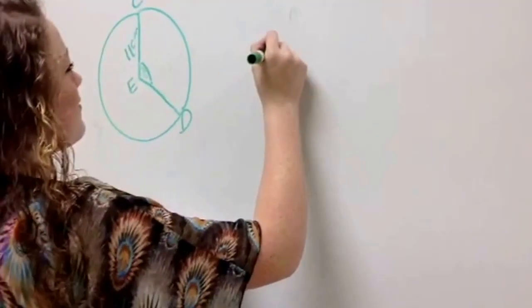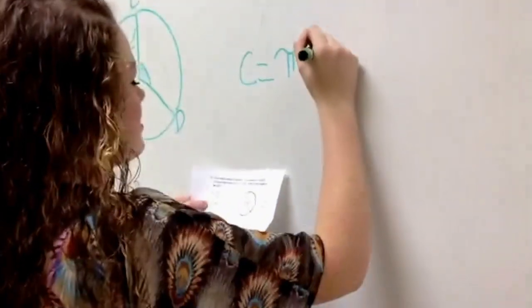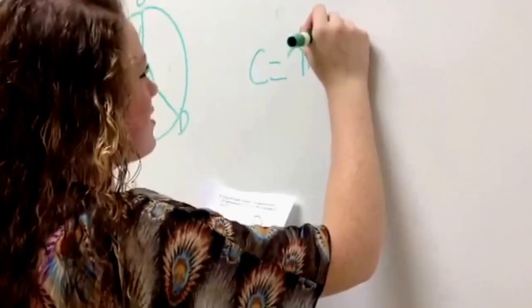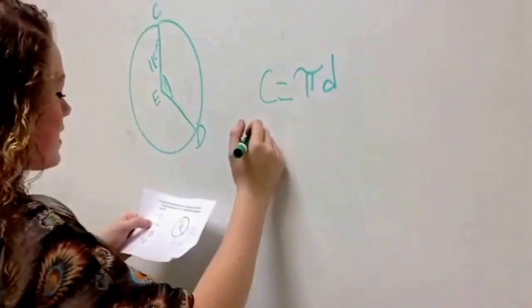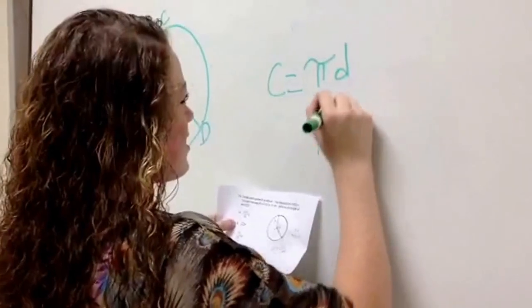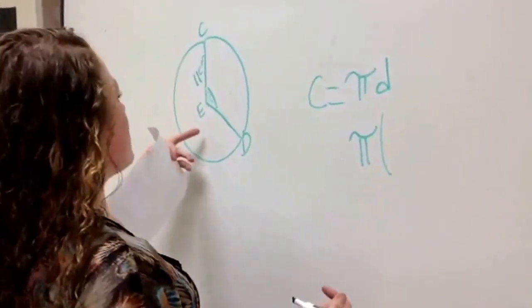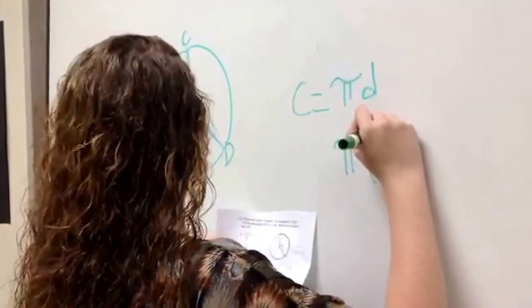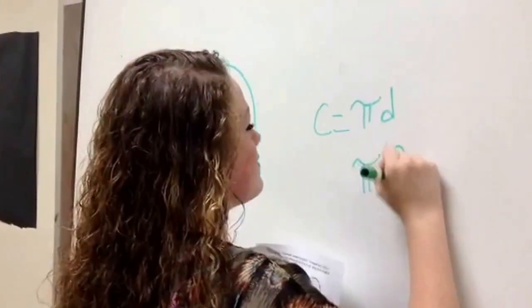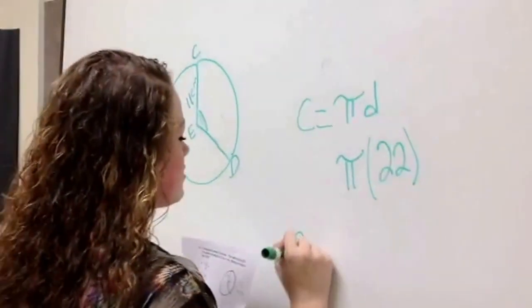So you found the formula for the circle, which is circumference equals pi times the diameter. The radius is 11. So 11 plus 11 is 22, and that is 22 pi.